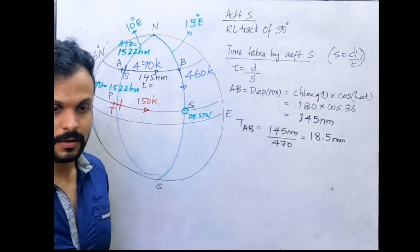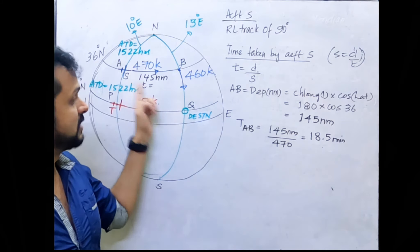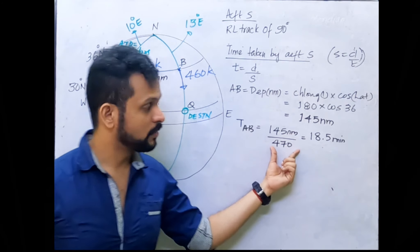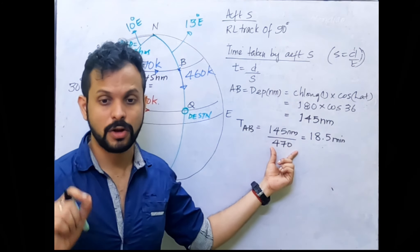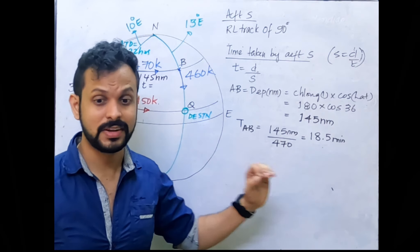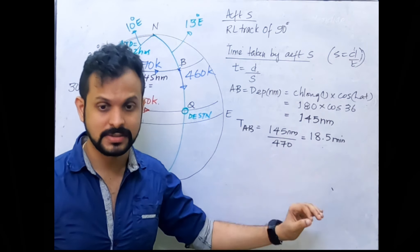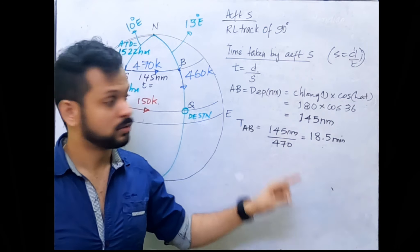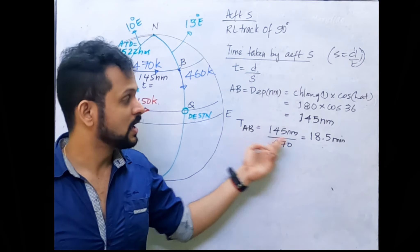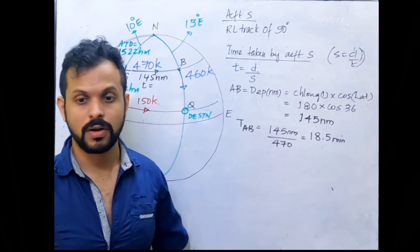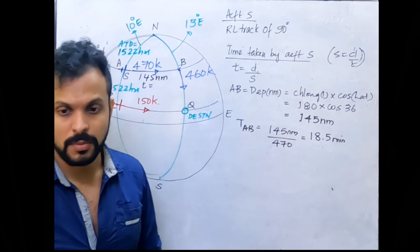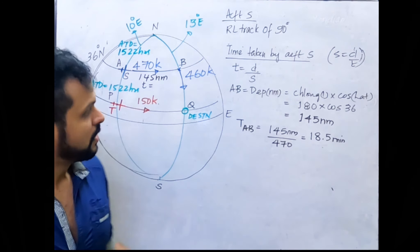So Aircraft S will take 18.5 minutes to reach point B. When you say the speed is 470 knots it means the aircraft travels 470 nautical miles every hour, so to travel just 145 nautical miles it takes about one-third of an hour — approximately 18.5 minutes.